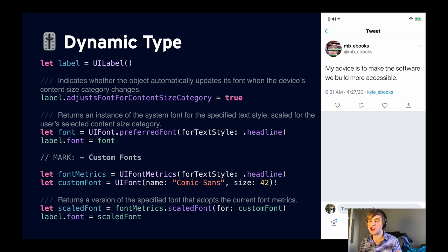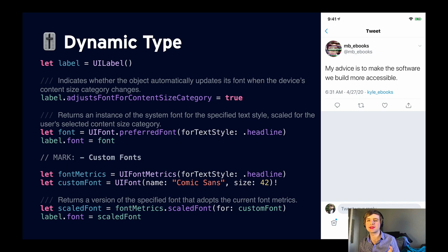You'll notice that the tweet text got bigger and the labels got bigger. Some elements on the screen don't change size — like a tab bar doesn't change size via dynamic type. But even at the largest accessibility size, the text isn't quite large enough, and that's probably because Twitter implemented this incorrectly. For every label in your app that wants to react to dynamic type, you want to set a property called `adjustsFontForContentSizeCategory` to true. That'll tell the label it can refresh its text size and layout whenever the dynamic type setting changes.